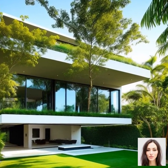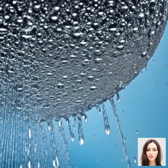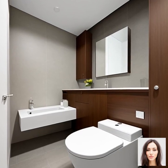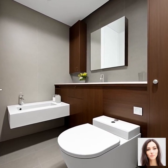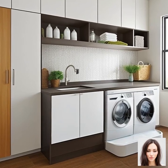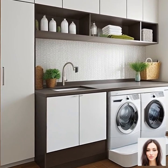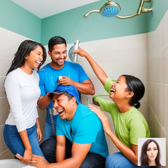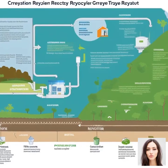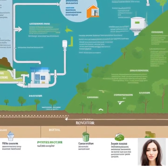Water conservation strategies in green home design. Water is an incredibly precious resource, and conserving it is a key aspect of sustainable living. So how can we design homes to use water more efficiently? Well, there are several strategies we can use. Firstly, there are water-efficient appliances and fixtures — things like low-flow shower heads, dual-flush toilets, and water-efficient dishwashers and washing machines can significantly reduce the amount of water used in a home.